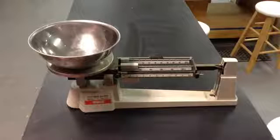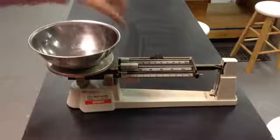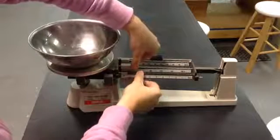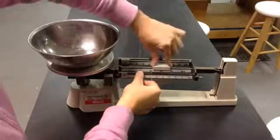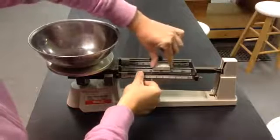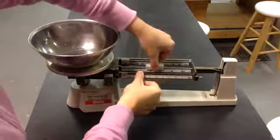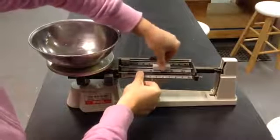Once you reach zero, you're ready to begin measuring your dry ingredients. I want to measure 342.2 grams. I will move my riders on the beams starting with the largest measurement, so I will move the largest rider on the largest beam to the 300, making sure it's firmly in the groove.